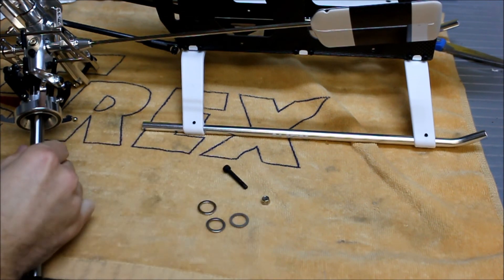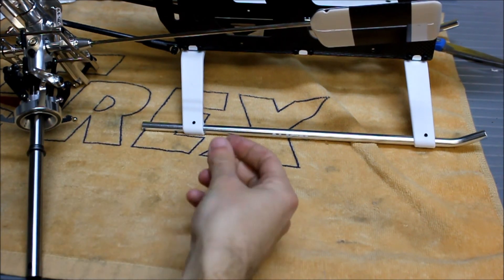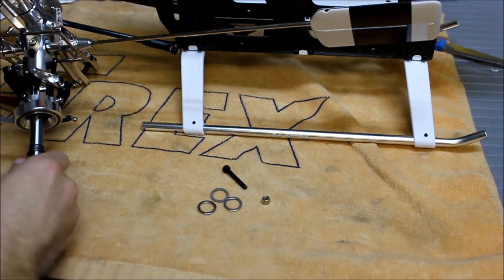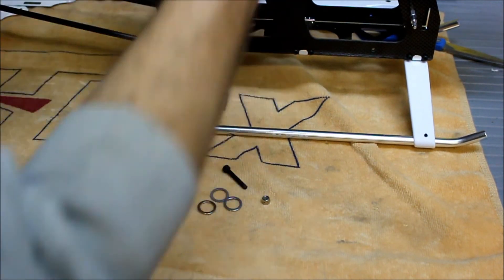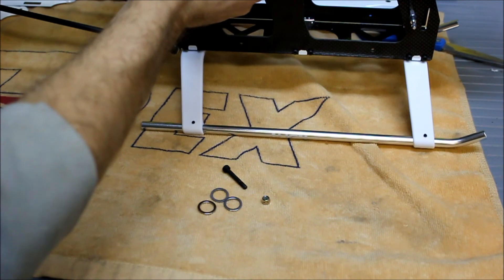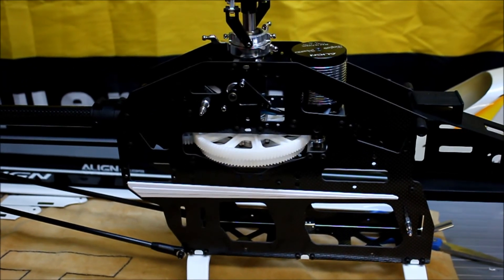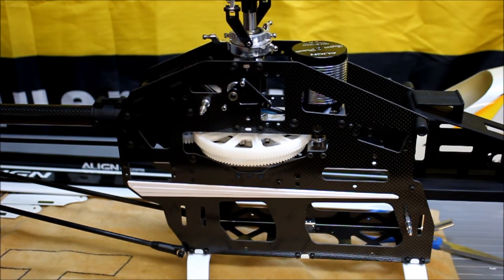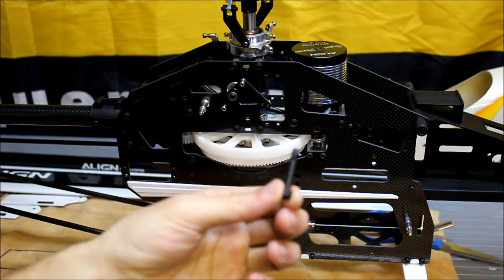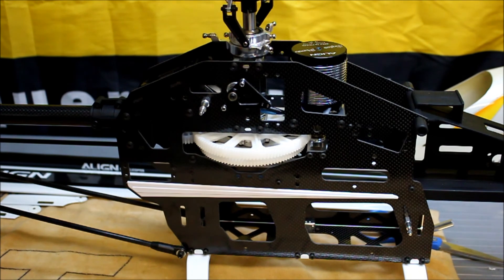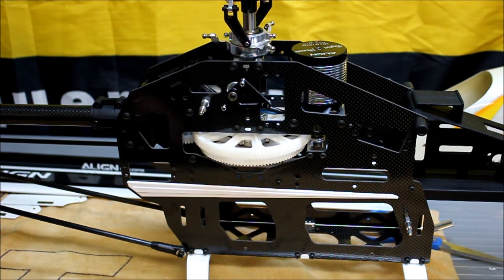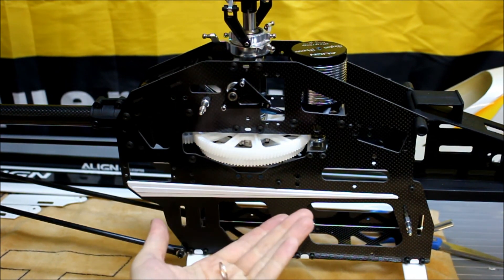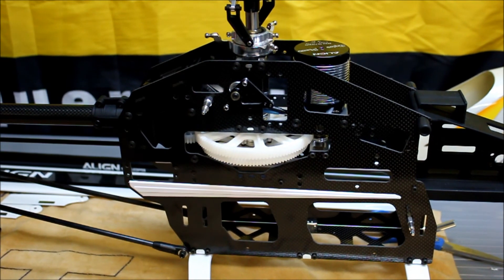The shims that we have here are there to take away the up and down slop once you install the main shaft into the two bearing blocks. So you throw a shim on your main shaft and then do a trial fit into the main frame of the helicopter. Once you've got it into the helicopter you can install your lower main shaft bolt and pull up and down on the rotor head to see if you have any up and down play. If this bolt doesn't go in easily your shim is too thick. If it goes in easily and you've got a little bit of up and down play then your shim is too thin. Mine ended up using the thinnest shim available in the kit.